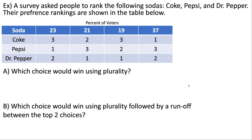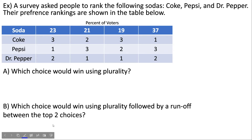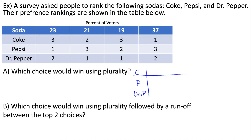Let's look at this example. A survey asked people to rank the following sodas: Coke, Pepsi, and Dr. Pepper. Their preference rankings are shown in the table. Part A asks which choice would win using plurality, and Part B asks which choice would win using plurality followed by a runoff between the top two choices. To solve using plurality, we set up a tally to keep track of how many votes everybody has.